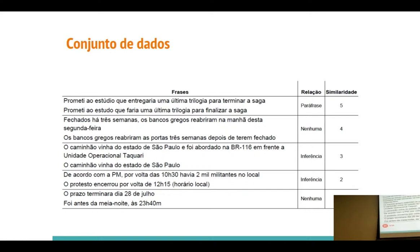O conjunto do ASSIN, para utilizá-lo, a gente não podia usar a coluna de relação, porque se a gente usar a relação já elimina metade do problema. Eles extraíram as frases do G1/Globo News. Depois da extração, botaram 36 pessoas a anotar o conjunto. Se uma frase não foi anotada da mesma forma ou ficou fora do intervalo de confiança para a similaridade, ela foi rejeitada. Cerca de 11% das frases acabaram sendo rejeitadas. Assim, a gente pode garantir que as similaridades estão corretas e que a relação não pode ser usada para treinamento do modelo.